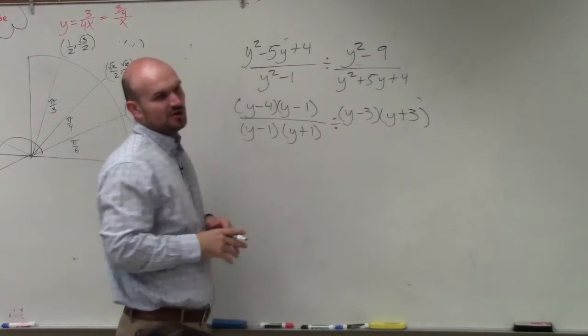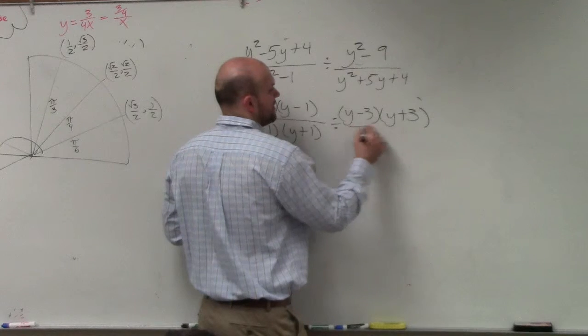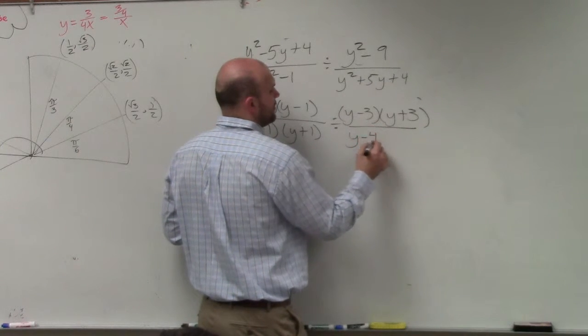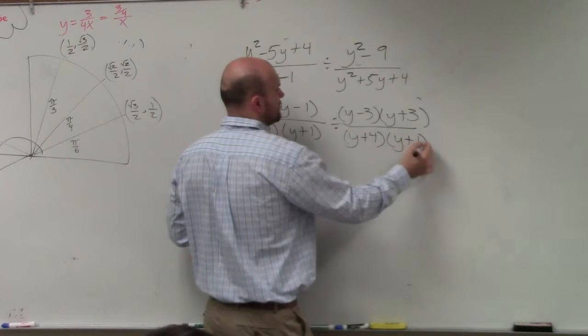And then over here, what two numbers multiply to give you 4, add to give you a positive 5. That's going to be (y+4) times (y+1).